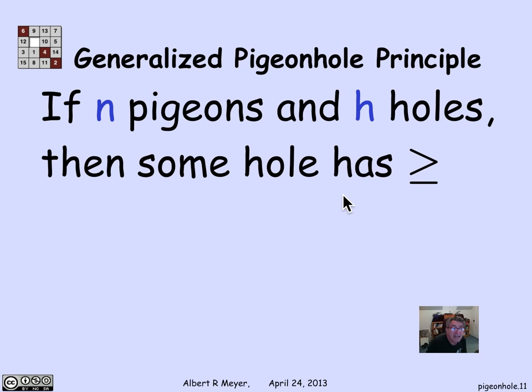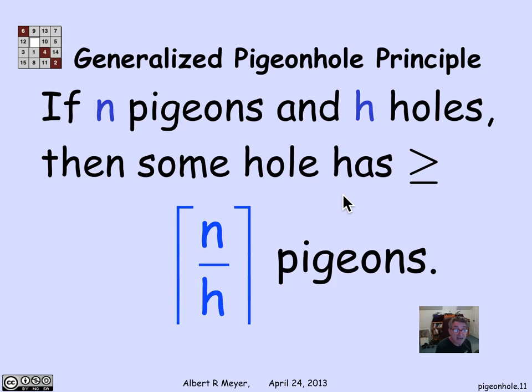More generally, if I have n pigeons, and I'm going to be assigning pigeons to unique holes, and if I have h holes, then some hole has to have n divided by h rounded up. Again, n divided by h can be understood as the average number of pigeons per hole, and the pigeonhole principle can be formulated as saying at least one hole has to have greater than or equal to the average number. And that is the generalized pigeonhole principle.